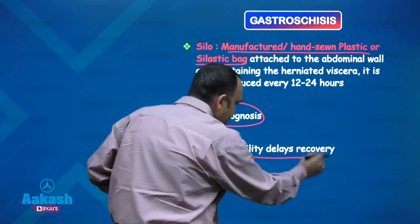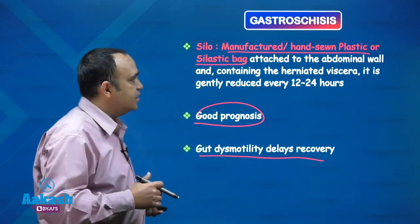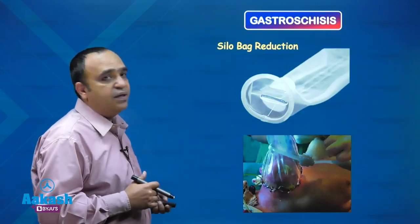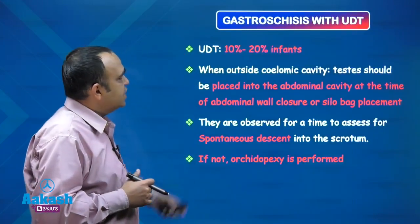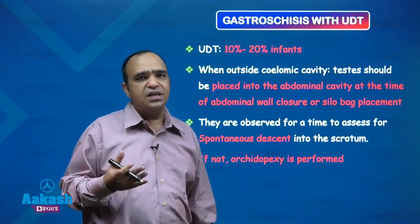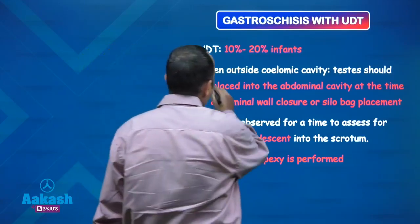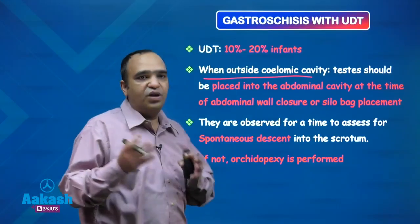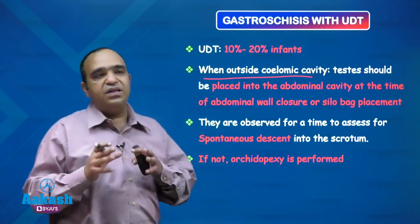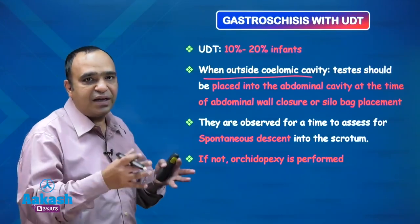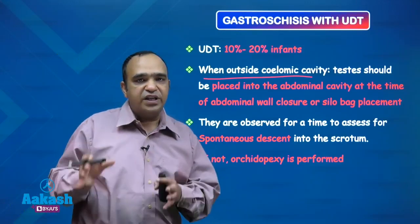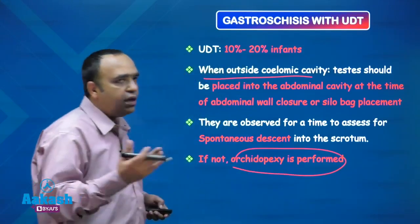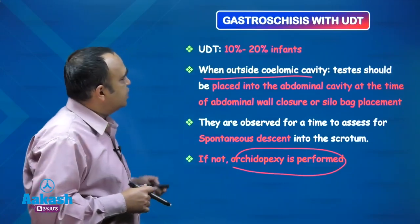The prognosis is good, but occasionally gut dysmotility can delay recovery. So the three techniques for gastroschisis management are: primary repair, patch repair, and silo reduction. As mentioned, some patients with gastroschisis — particularly boys — can have associated undescended testes. If the testis is lying outside the abdominal cavity along with the bowel, we place it back into the abdominal cavity during reduction, then wait for spontaneous descent. If that does not happen, we later perform orchidopexy to place the testis into the scrotum.